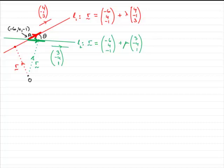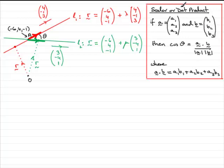So how do we get that angle? Well, what you need to use is often referred to as the scalar or dot product. If you've got two vectors, A and B, with components A1, A2, A3 and B1, B2, B3 respectively, cos theta equals A dot B over the magnitude of A times the magnitude of B.